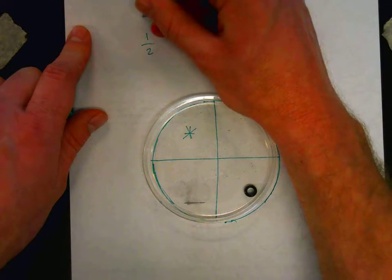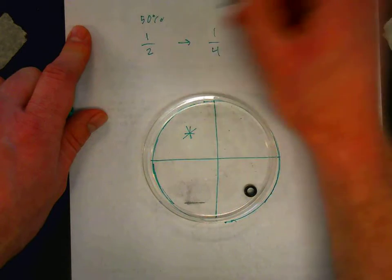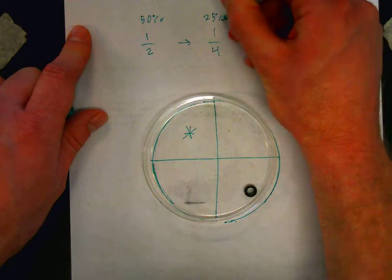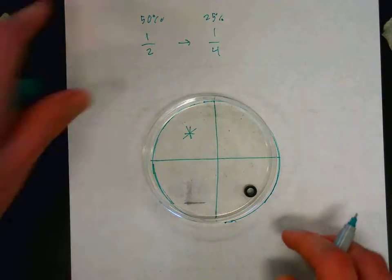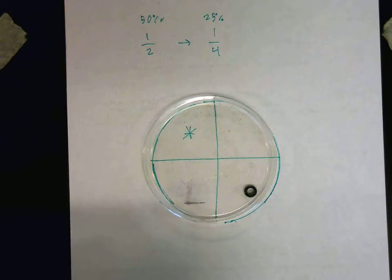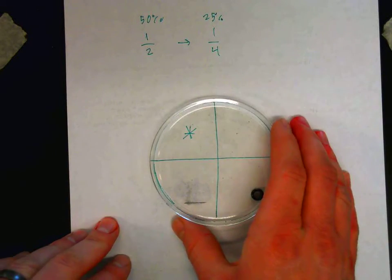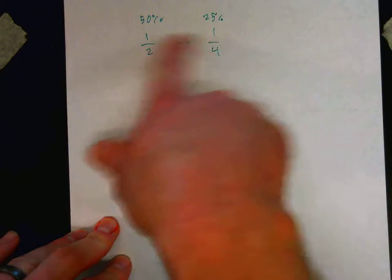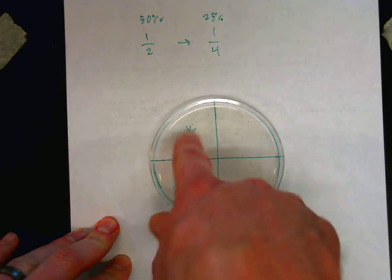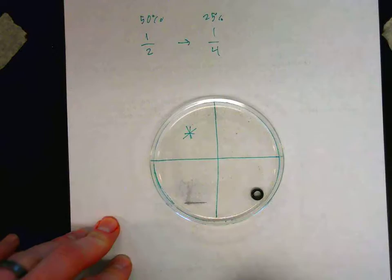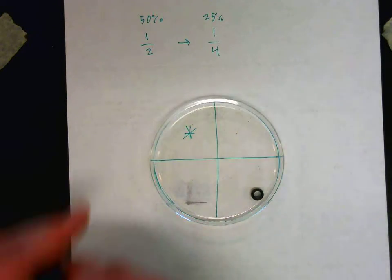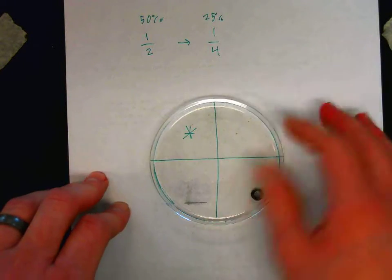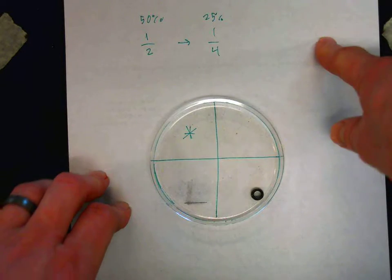So there's 50% of the time to 25% of the time. So as we increase the number of possible locations that the bead could be in, the probability is decreasing that it will be in one of those possible locations. Now, if we continue to add more locations, this probability would also continue to decrease.